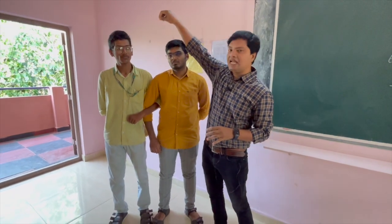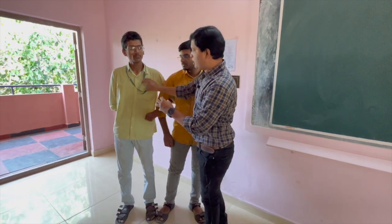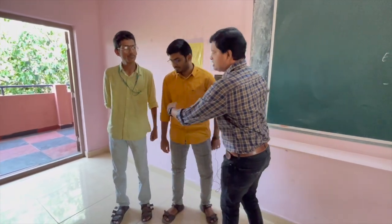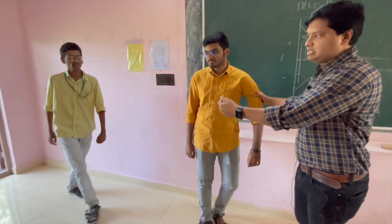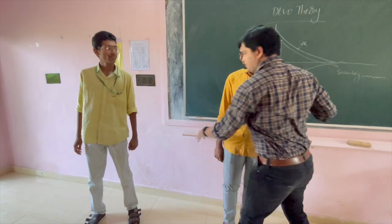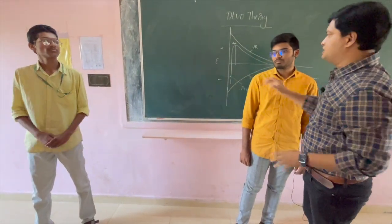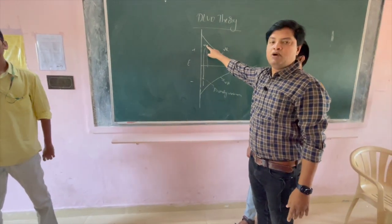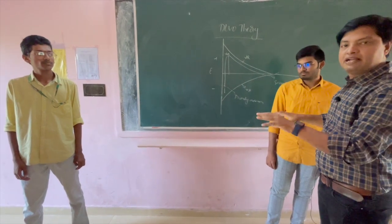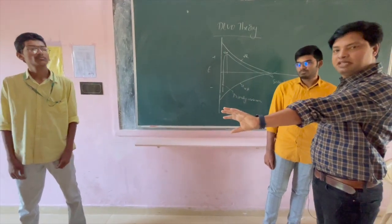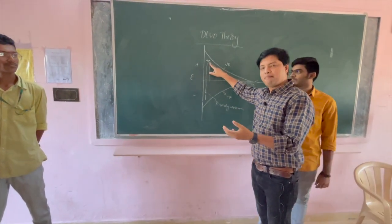If I add electrolytes slowly, the electrolytes will adsorb on the surface of the colloid and the colloids will start repelling each other. As I add electrolytes, they start repelling each other. At a certain point we get maximum repulsion, represented by Vm — voltage maxima. The added electrolytes are sufficient to create maximum repulsion between the colloids. That point is represented by Vm, voltage maxima.